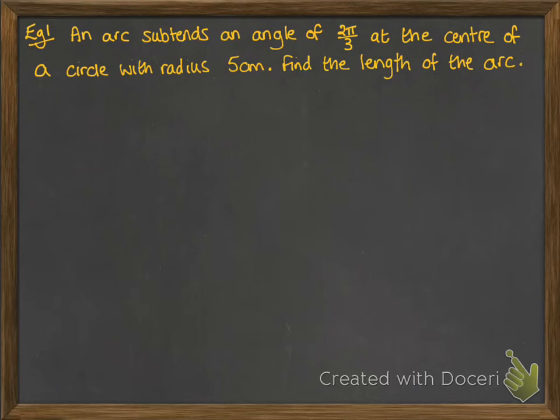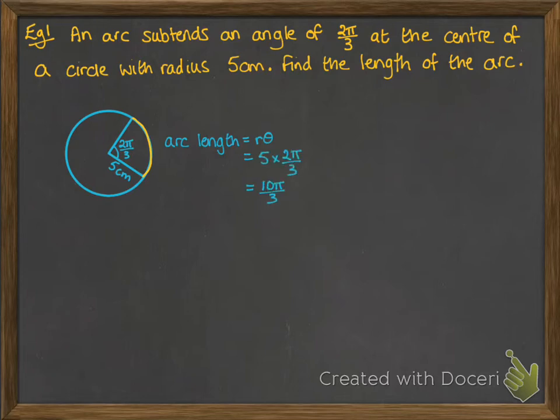Okay, so here's an example. An arc subtends an angle of 2π by 3 at the centre of a circle with radius 5 centimetres. Find the length of the arc. So let's just draw what that looks like. So subtends just means the angle at the centre that's made by that arc. We're going to find that arc length, which is equal to r theta. Always write out your formulas first before you put numbers in. And we get our final answer of 10π by 3.